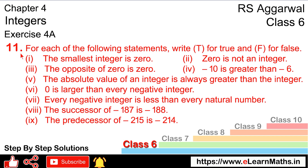Let's do question number 11 of exercise 4a, that is integers. Question number 11 is: for each of the following statements, write true or false. First part: the smallest integer is 0. Integer includes both plus and minus values, so if we look at minus values, they go even smaller — so the smallest integer is not 0. There are also smaller negative values.